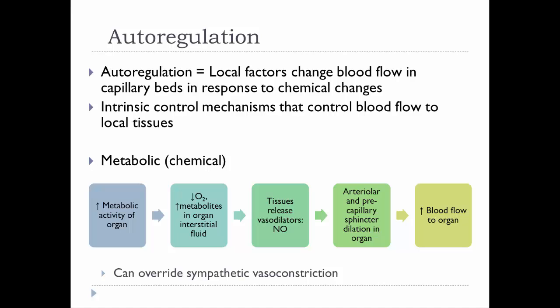We also need to regulate how blood flows through those capillaries in particular tissues depending on the needs of that tissue. That's referred to as auto-regulation — the idea of local factors that change blood flow in the capillary beds. This may be in response to chemical changes or even stretch in the smooth muscles of the blood vessels feeding into those capillary beds. These are all intrinsic control mechanisms, that is, local control that triggers changes in blood flow to those tissues. One type of mechanism involves metabolic or chemical responses by smooth muscles to particular metabolites or oxygen levels.